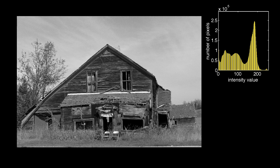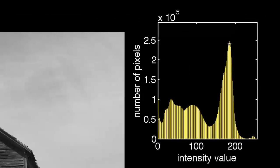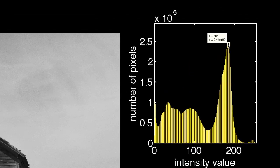The histogram has a vertical bar at each integer location between 0 and 255, and the height of the bar tells us the number of pixels that contain the corresponding intensity. For example, at this location we find that there are roughly 244,000 pixels that have an intensity of 185.